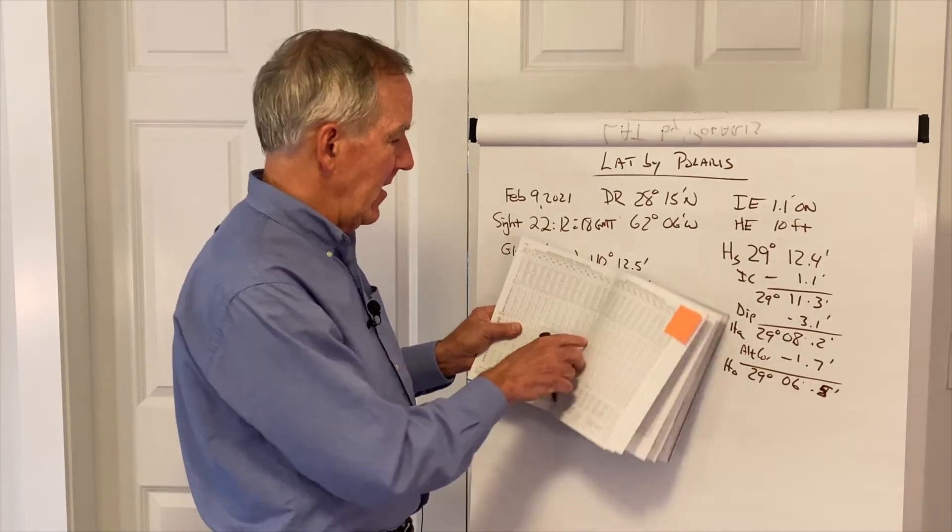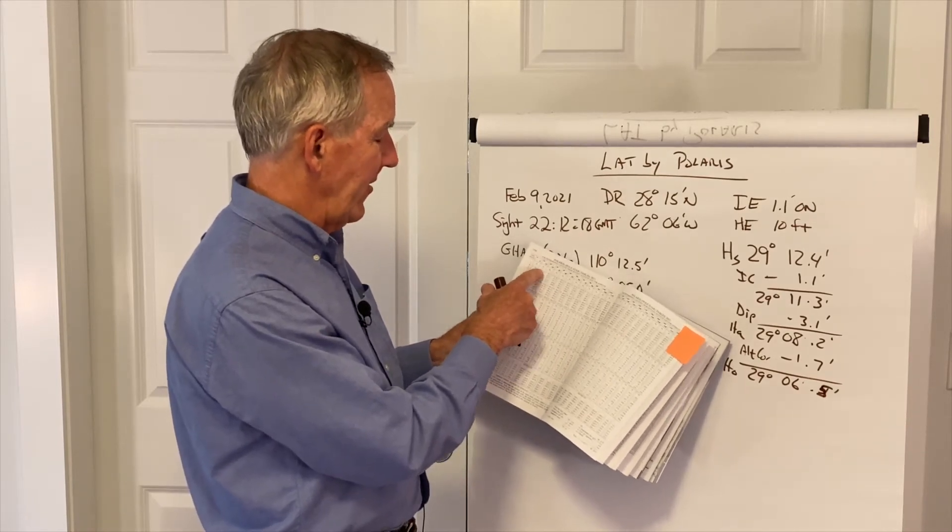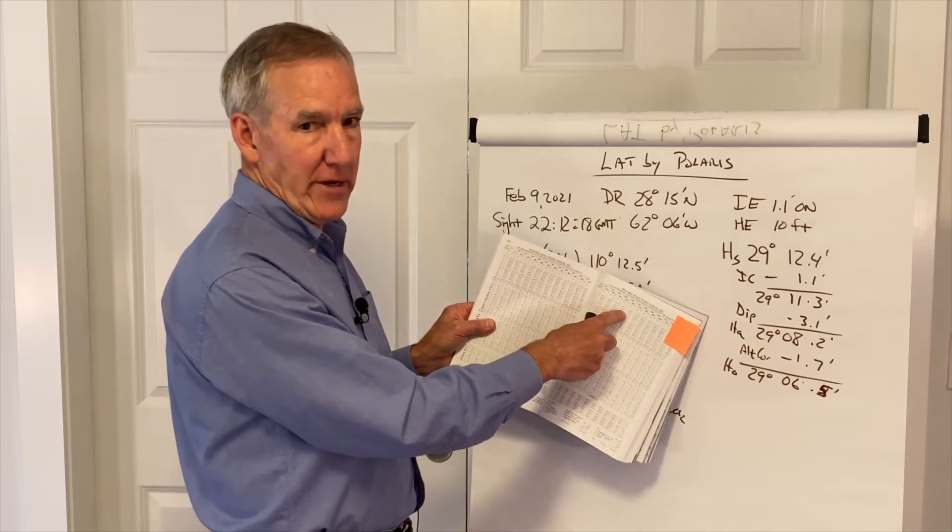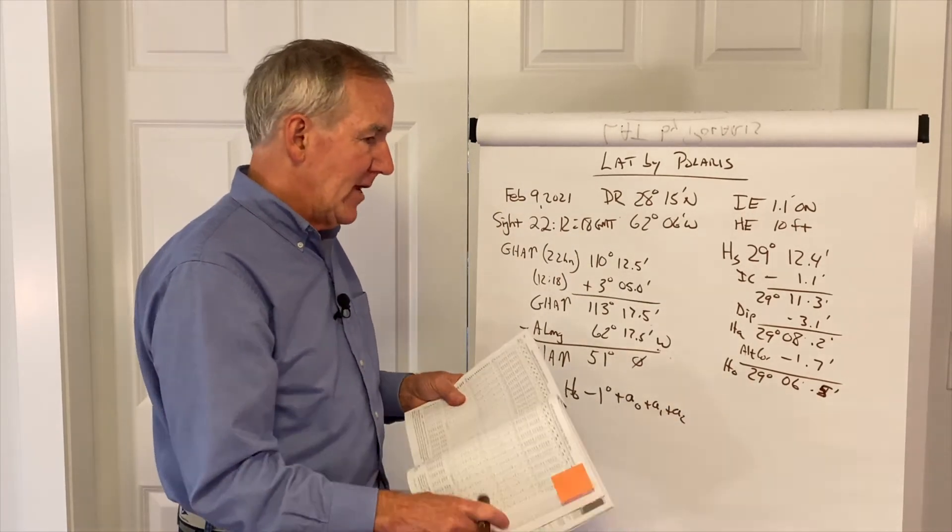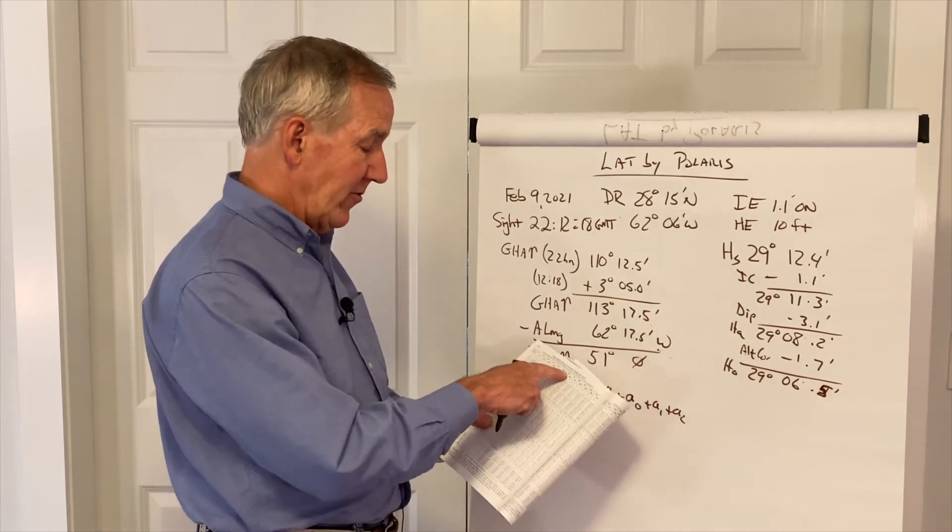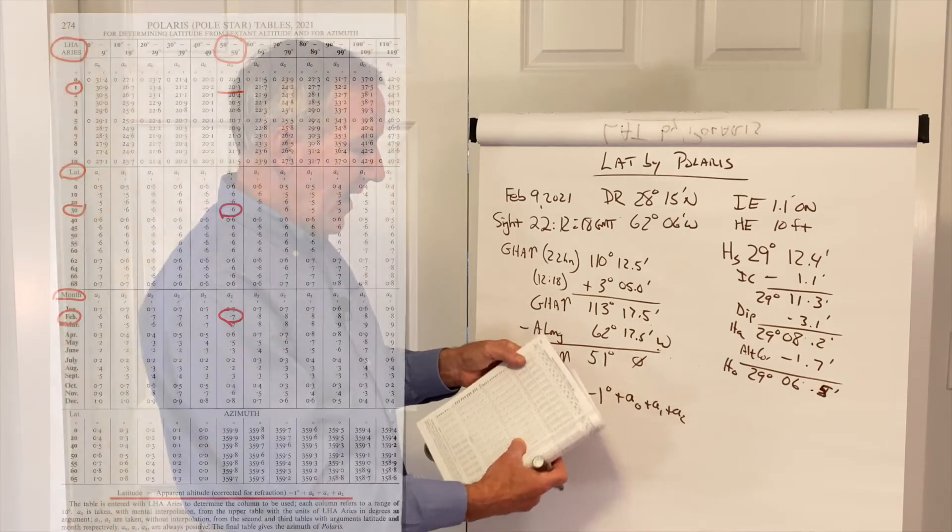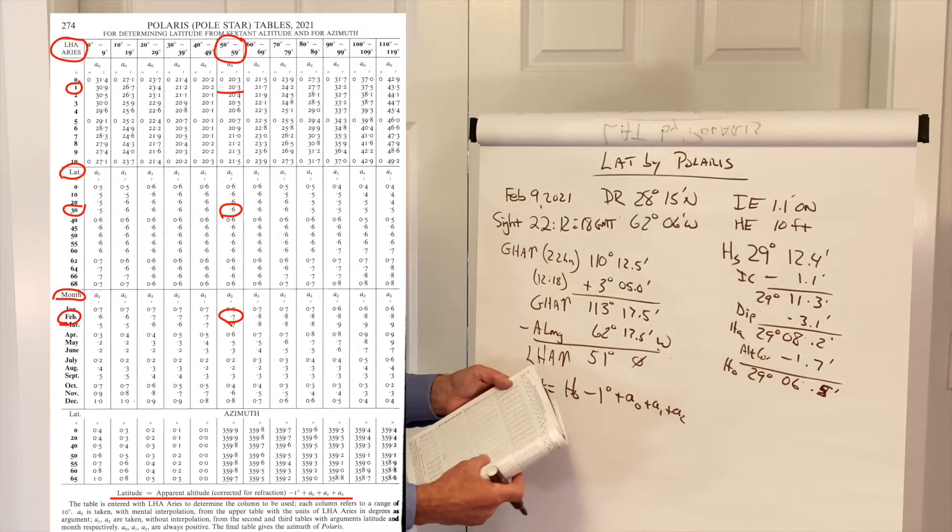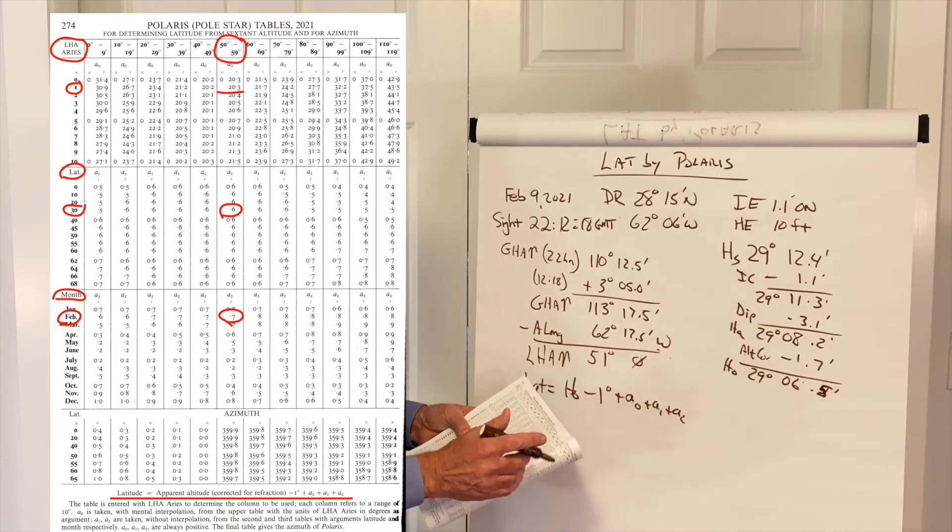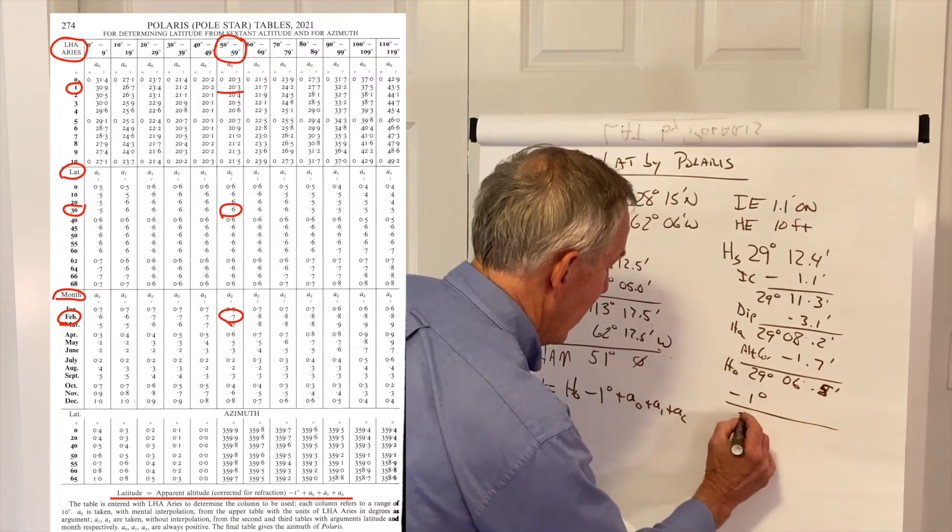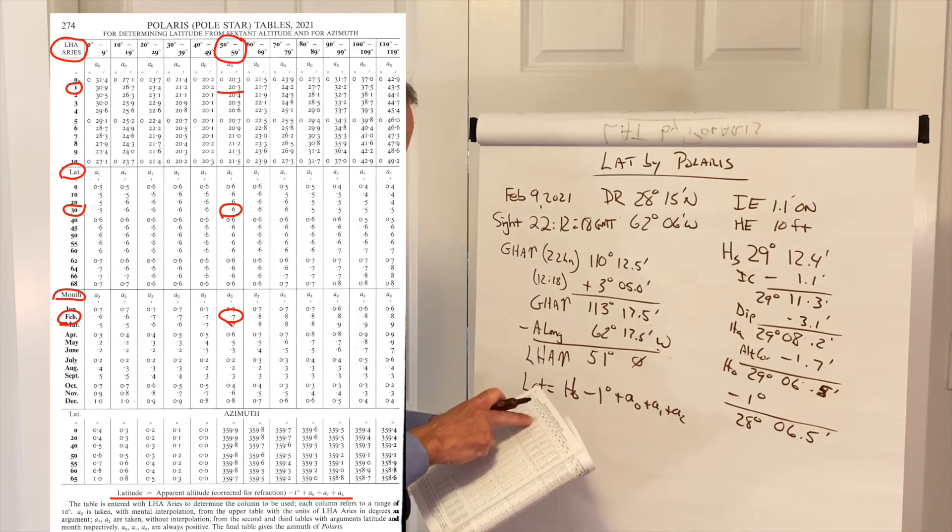Now, you do need to note that on certain values, in many of them they are 0 degrees in some minutes, and over here, it's 1 degree in some minutes. So, you want to make sure you grab that extra degree if it applies, because it's not printed every line. So, we go in under the LHA of Aries, which is 51, and we find the range, 50 to 59. And we have to subtract our 1 degree.